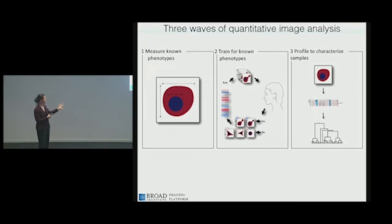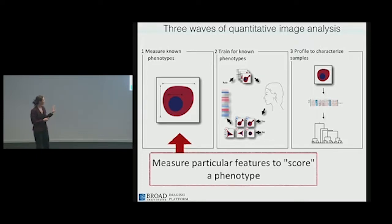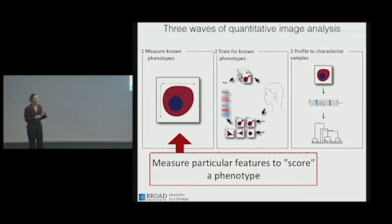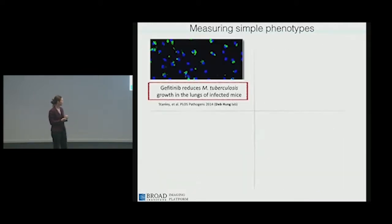I won't spend too much time on the first two stages—I really want to focus on the latter, which has been the most recent work in my group. But first, let's talk about the simple end of the spectrum. Often a biologist will say, 'I'm going to be collecting these images, can you help me measure this thing?' In such cases, the goal is to extract those features in an accurate and automated way in order to score a particular phenotype.